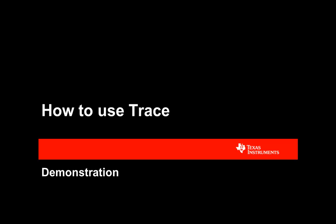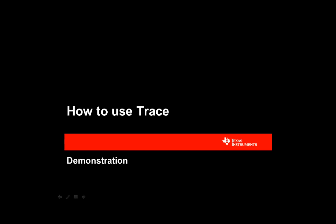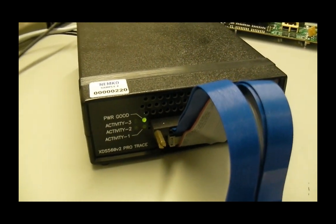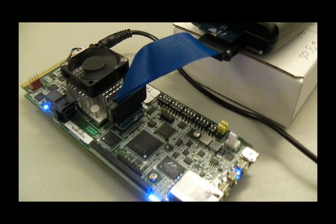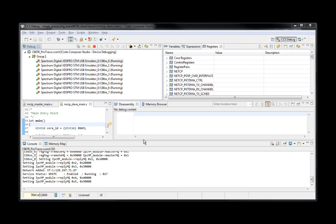Now that we have covered a basic introduction to trace, I am going to hand it over to Rafael, who is going to do a brief demonstration on how to use core and system trace. For the demonstration today, I will show an example of core trace using an XDS 560 Pro Trace on a C6678 EVM board. I will show how easy it is to set up and visualize the execution data, as well as extract relevant information about the running system. The setup is comprised of the XDS 560 V2 Pro Trace emulator connected to the C6678 EVM via the 60-pin JTAG connector. The board is running the image processing demonstration code of the multi-core SDK package. The CCS debug session is already connected and the code is loaded to all the cores of the C6678 device.